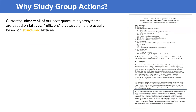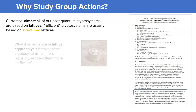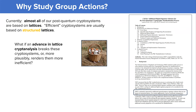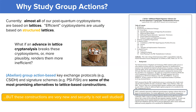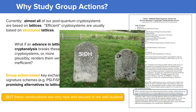So why should we care about group actions? Currently, most of our post-quantum cryptosystems are based on lattices. What if an advance in lattice cryptanalysis renders these schemes more inefficient? Like NIST suggests in their recent call for signature schemes, we don't want to put all of our post-quantum eggs in one basket. Group action-based cryptosystems, like those from isogenies, have turned out to be some of the most promising alternatives to lattice-based constructions. However, these constructions are very new and their security is not as well studied, which has led to some surprising and unfortunate attacks, like the recent work Breaking SIDH.